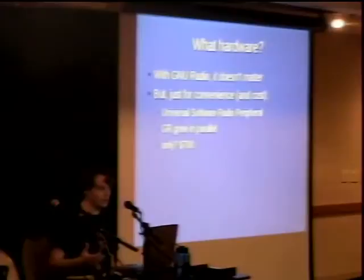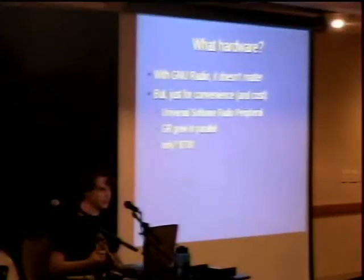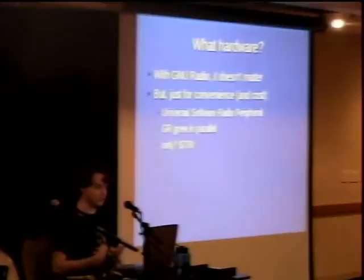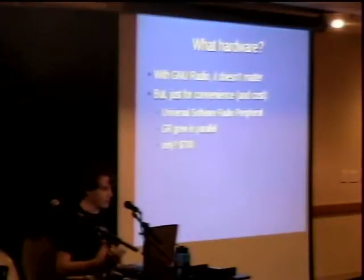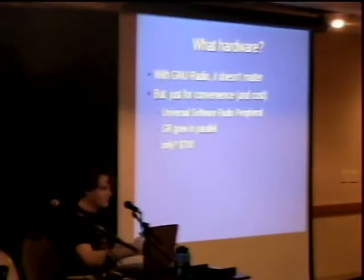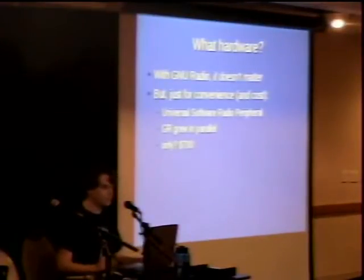The USRP and GNU Radio have kind of come up together, and it's relatively inexpensive. The guys who started this way back were using a $2,000 data acquisition PCI card — two-channel, 100 million samples per second. That's a lot of data. $2,000 or $700 for the USRP — I'd pick the cheaper option.